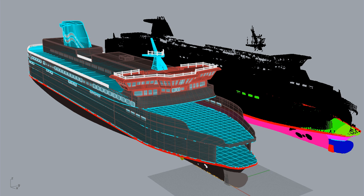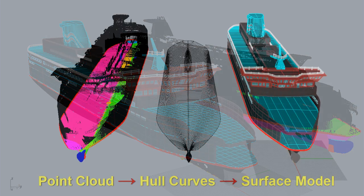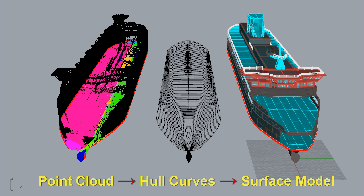What I'll be doing is taking a point cloud model and generating hull curves from that point cloud, and then finally a surface model. Let's begin by taking a look at a screenshot of our project. On the left we have the point cloud model, in the center are the hull curves generated from the point cloud, and then on the far right the final surface model.